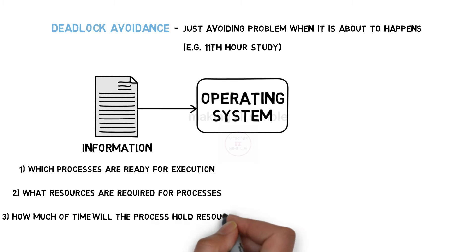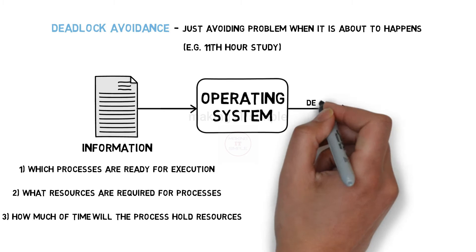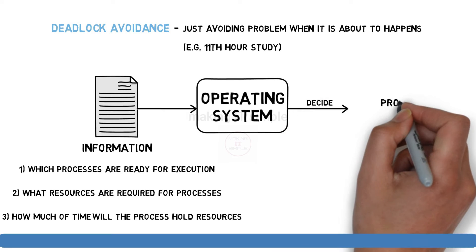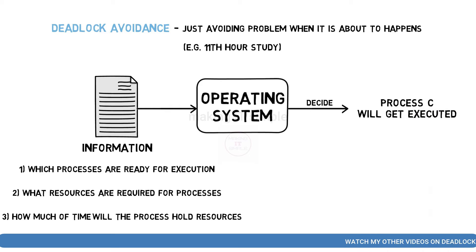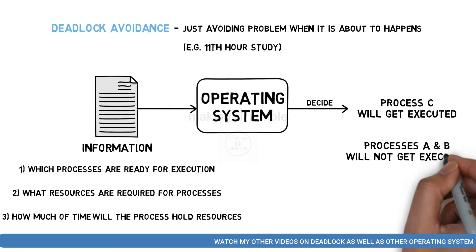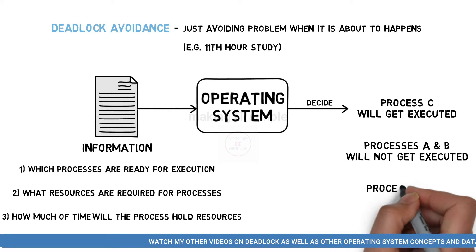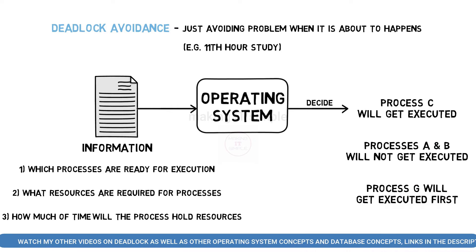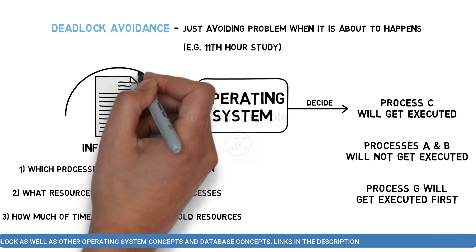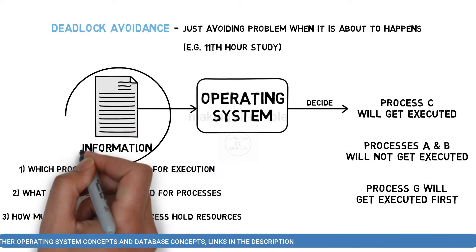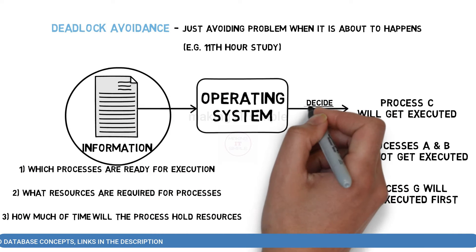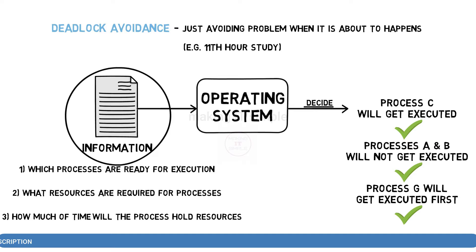For how much time processes will hold these resources — we have to give these details before the processes start their execution, so that the system can decide which process will perform first. In short, the system takes the information and decides actions based on that info that will avoid the deadlock.